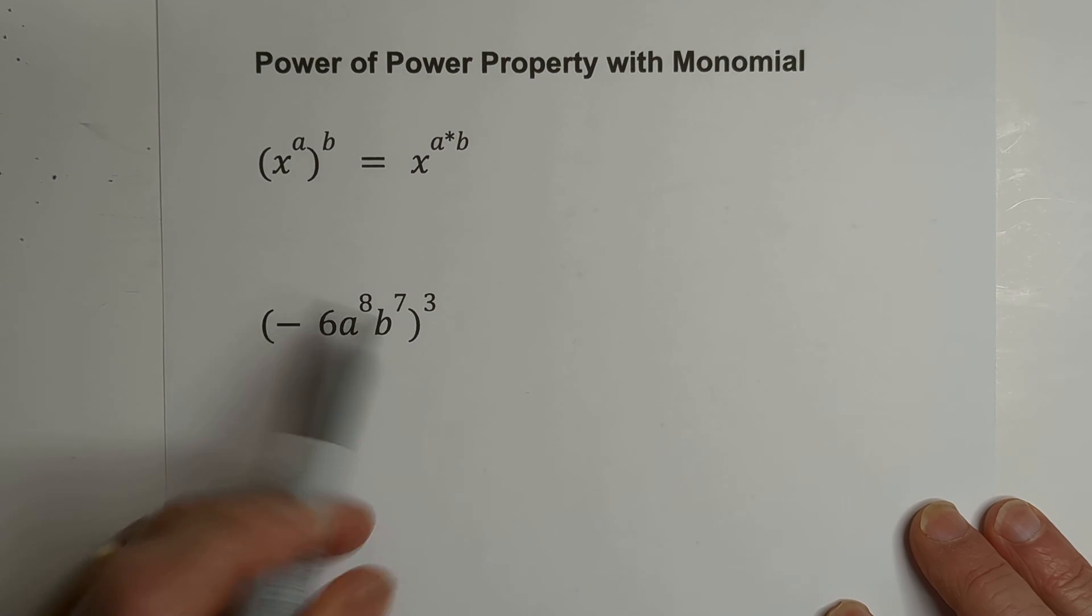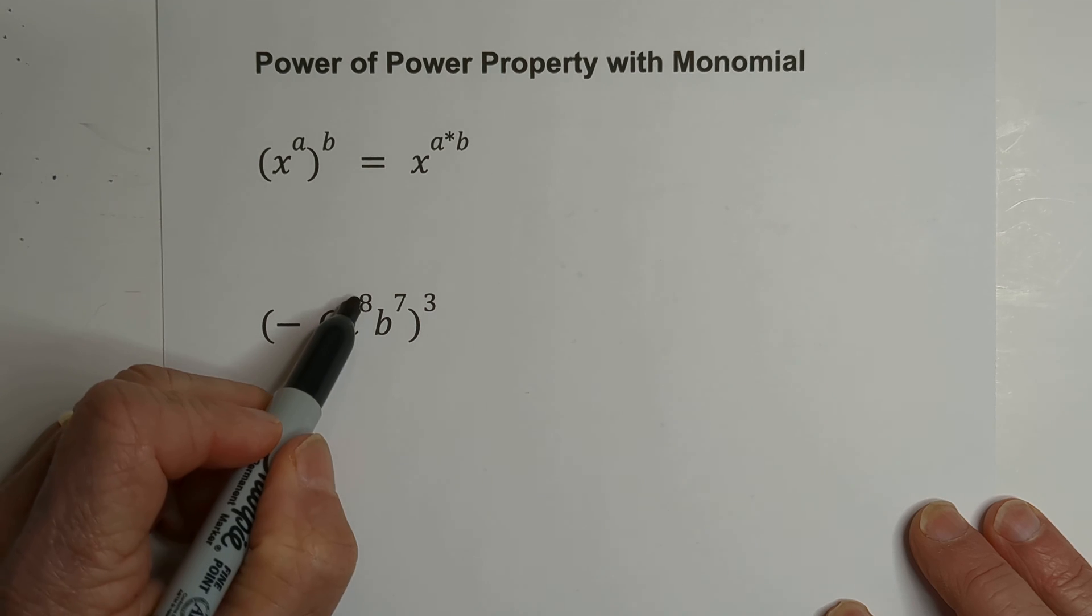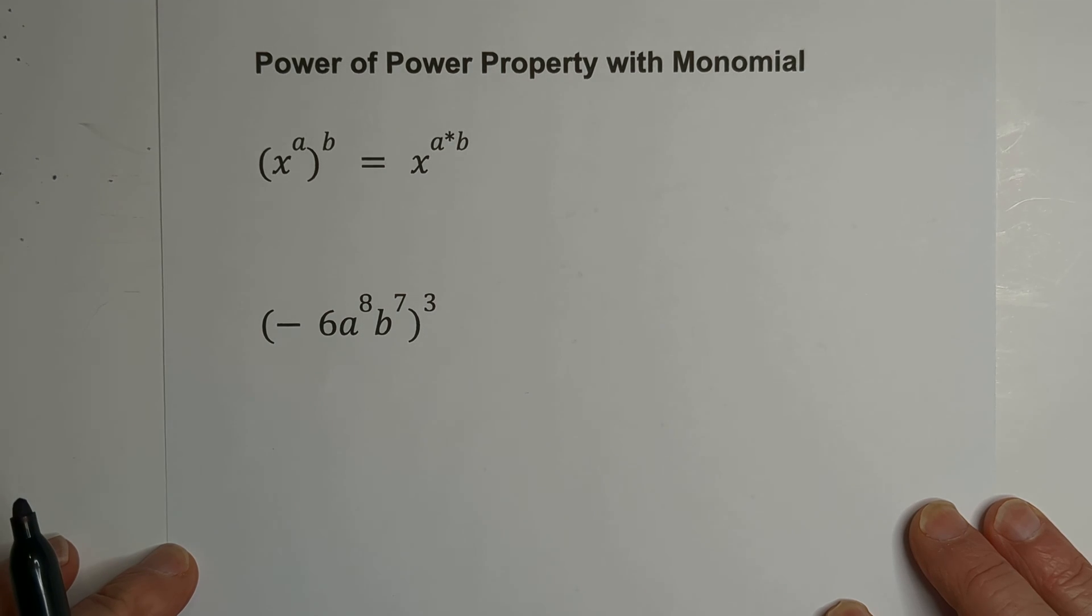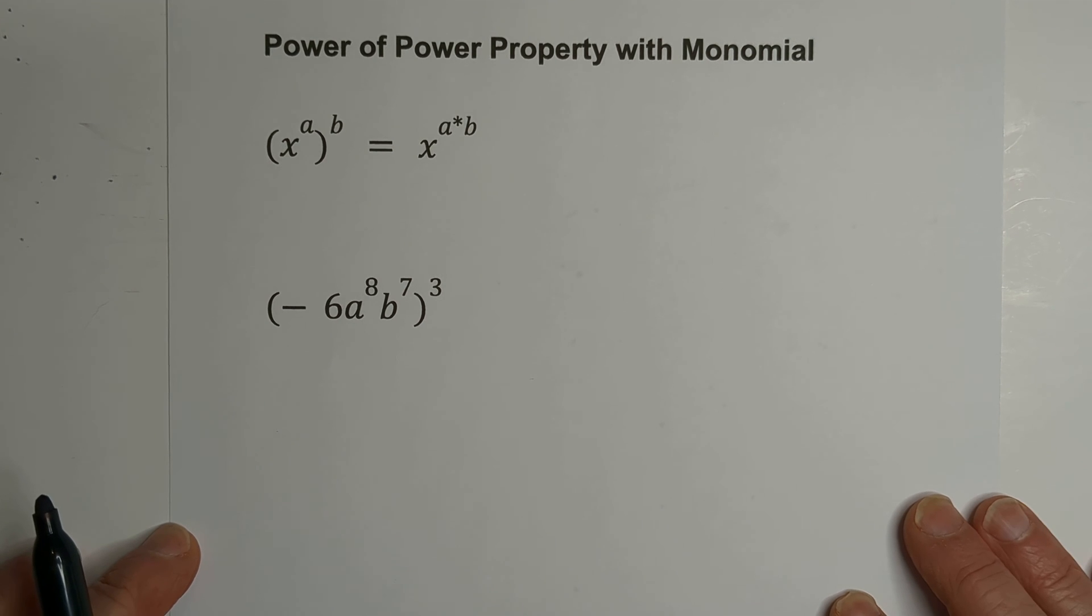So we have this monomial. We have 6A to the 8, B to the 7, and it's going to be raised to the cube. Let's get to work.